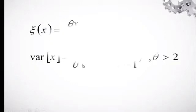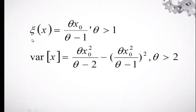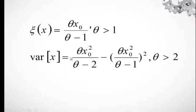The mean and variance of the Pareto distribution are as follows. The mean is equal to theta times x sub zero over theta minus one, where theta must be greater than one. The variance is equal to theta times x sub zero squared over (theta minus 2) minus the quantity theta times x sub zero squared over (theta minus 1) squared, where theta must be greater than two.